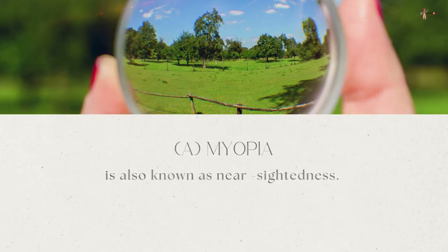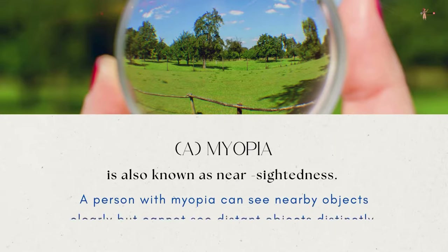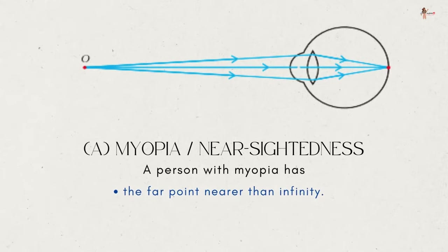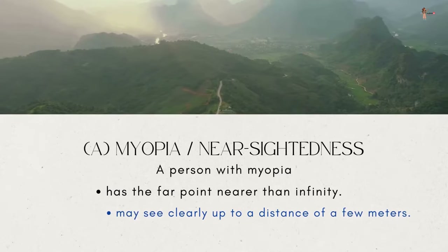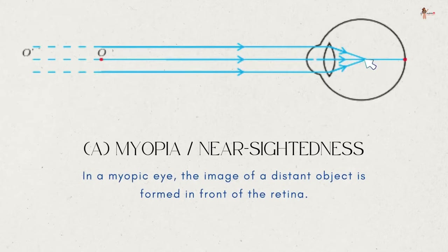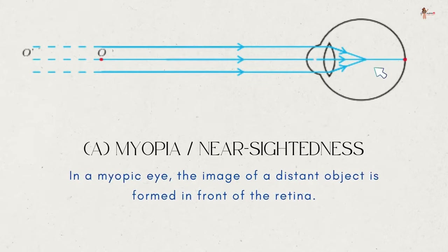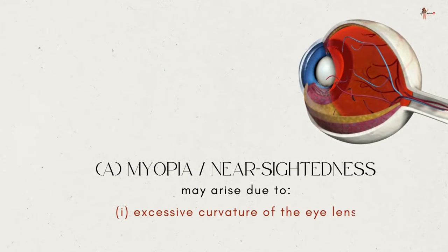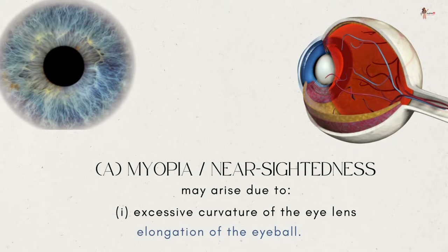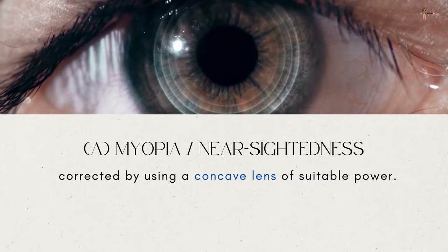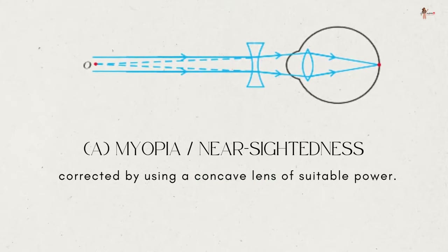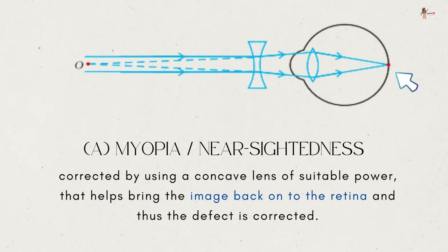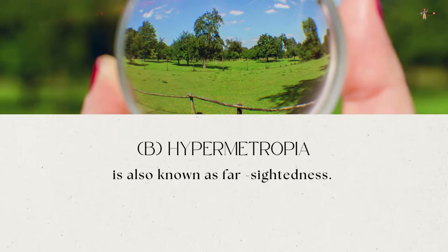Myopia, also known as nearsightedness: a person with myopia can see nearby objects clearly but cannot see distant objects distinctly. Such a person has the far point nearer than infinity and may see clearly only up to a distance of a few meters. In a myopic eye, the image of a distant object is formed in front of the retina, not at the retina itself. This defect may arise due to excessive curvature of the eye lens or elongation of the eyeball. It can be corrected by using a concave lens of suitable power, which brings the image back onto the retina.